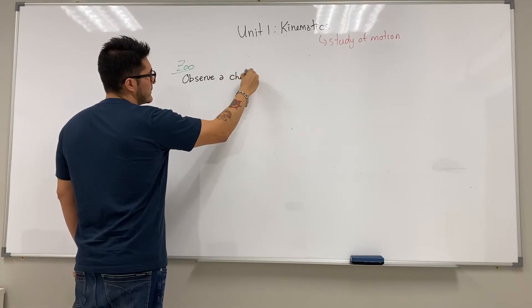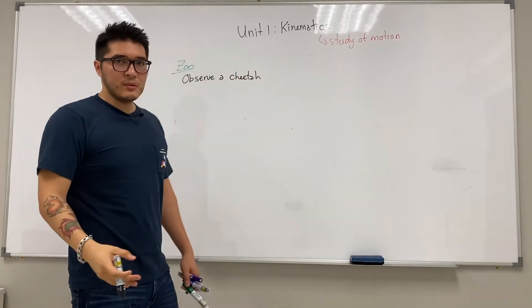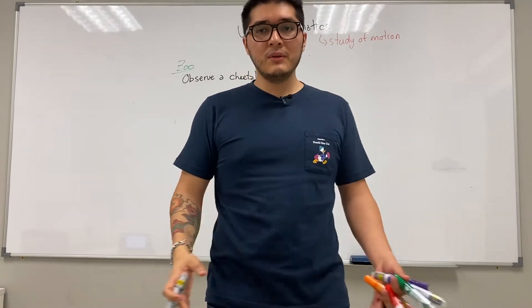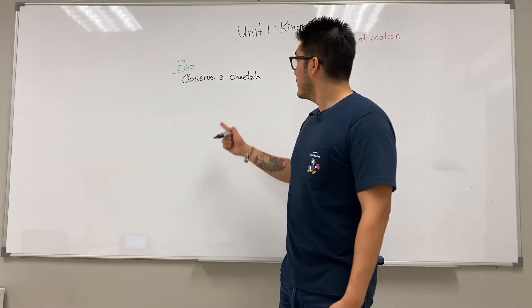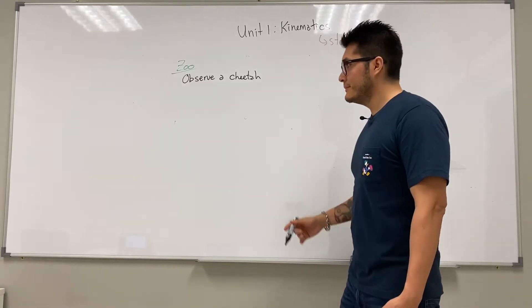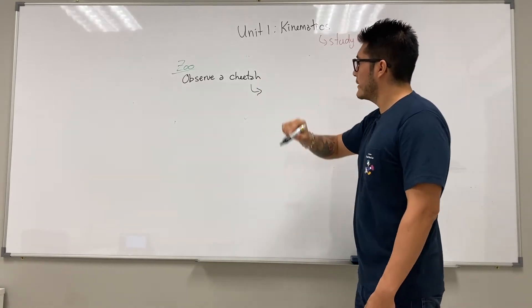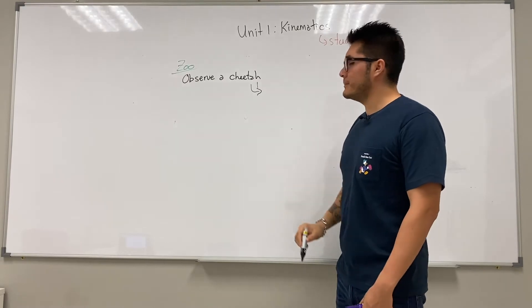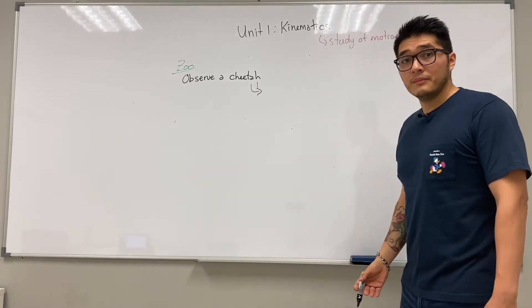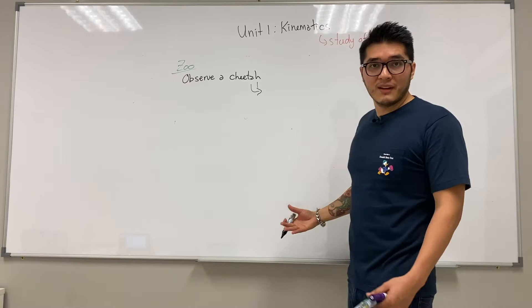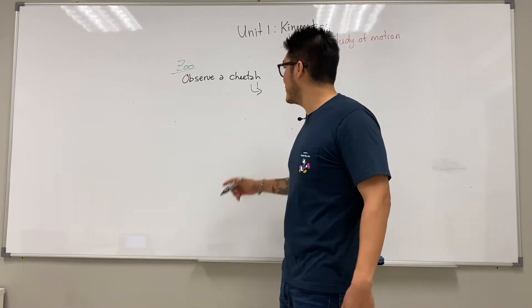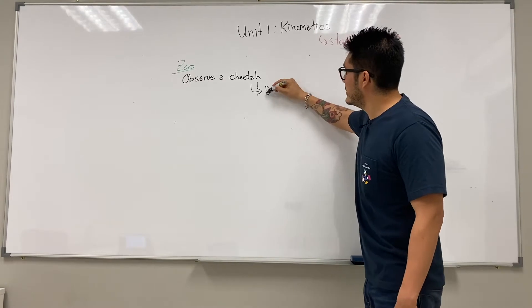Now as physicists, we have to follow a couple of rules whenever we make observations. So I'm going to introduce you to the very basic ones. When you want to observe a cheetah, you want to follow a couple of rules. Let's call them rule number one. What should be the first rule? Well, do not disturb the cheetah, because if you disturb a cheetah, you're probably going to be gone. So do not disturb the cheetah.